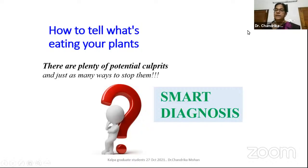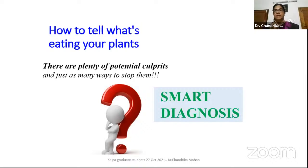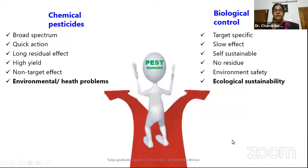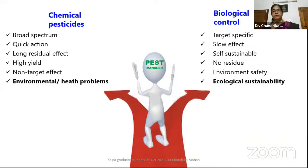We have to do smart diagnosis and smart decisions. Decision making and diagnosis are very important. If a particular species of insect is attacking our crop, we have to identify it correctly — what it is — then only we can control it. Taxonomy plays a very important role in pest management. There are broadly two options for a pest manager: the chemical option and the biological control option.